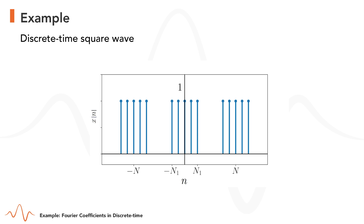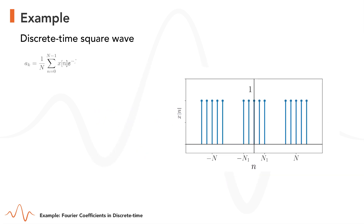Let us compute the Fourier coefficients for a given example. This example is a periodic rectangular wave. We have considered an analogous example in continuous time, and there it was relatively easy to compute the Fourier series coefficients. However, in discrete time it will be more difficult. Let us start.